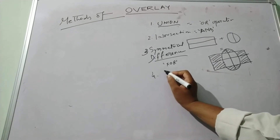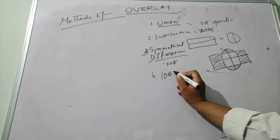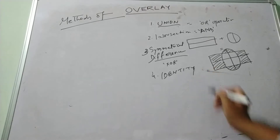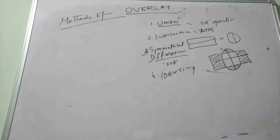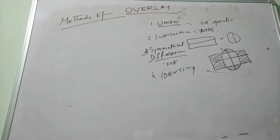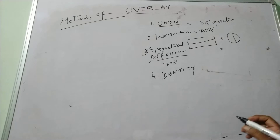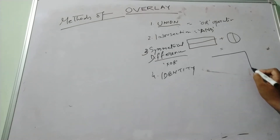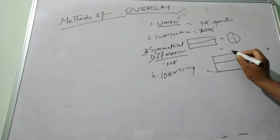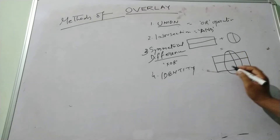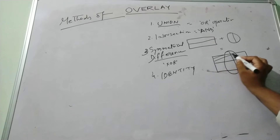Next, coming to Identity. In Identity, it creates an output layer with the spatial extent of the input layer but includes the attribute information of the overlay layer.